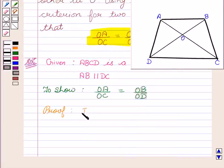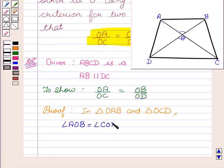In triangle OAB and triangle OCD, we see that angle AOB is equal to angle COD since they both are vertically opposite angles. Therefore, angle AOB = angle COD, vertically opposite.